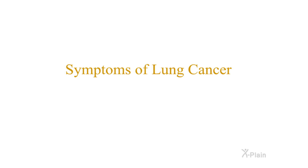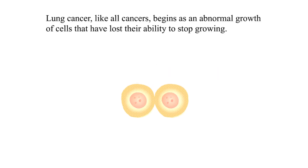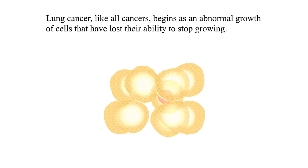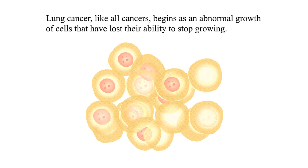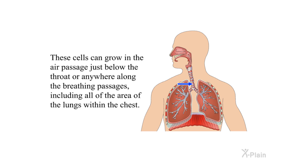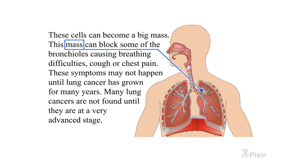Symptoms of lung cancer: Lung cancer, like all cancers, begins as an abnormal growth of cells that have lost their ability to stop growing. These cells can grow in the air passage just below the throat or anywhere along the breathing passages, including all of the area of the lungs within the chest. These cells can become a large mass that can block some of the bronchioles, causing breathing difficulties, cough, or chest pain. These symptoms may not happen until lung cancer has grown for many years, and many lung cancers are not found until they are at a very advanced stage.